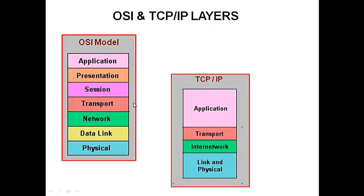The transport layer determines the means of transport being used — TCP or UDP. TCP is a reliable mode of transport. UDP, which is User Datagram Protocol, is not reliable — it is connectionless because it sends data and doesn't care whether it is delivered or not.